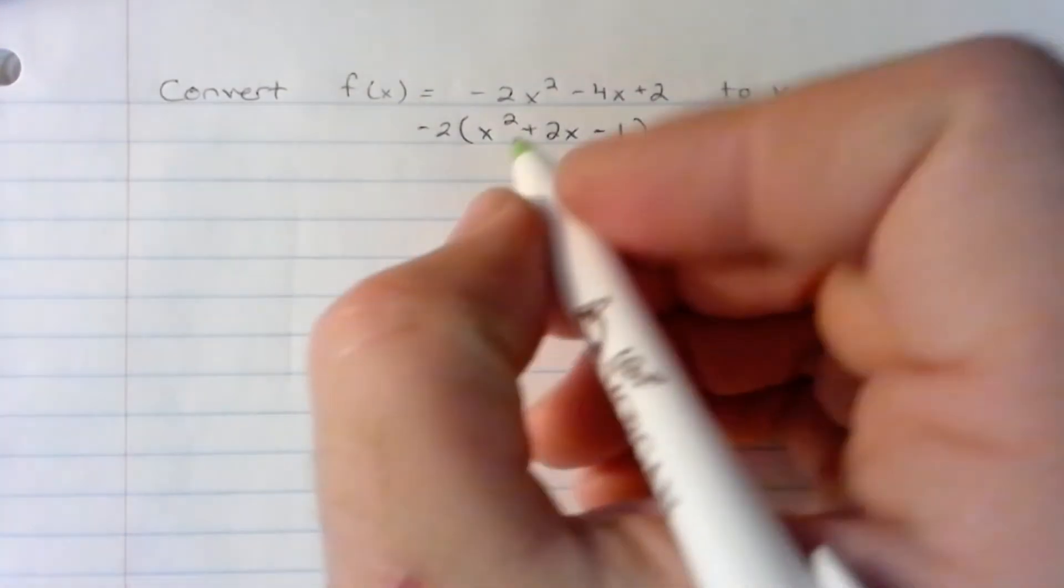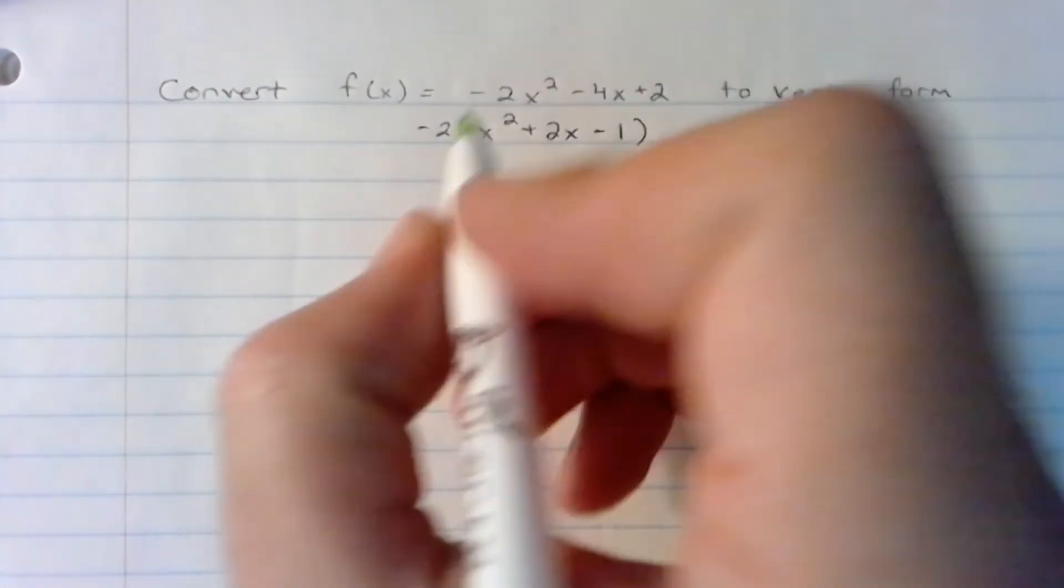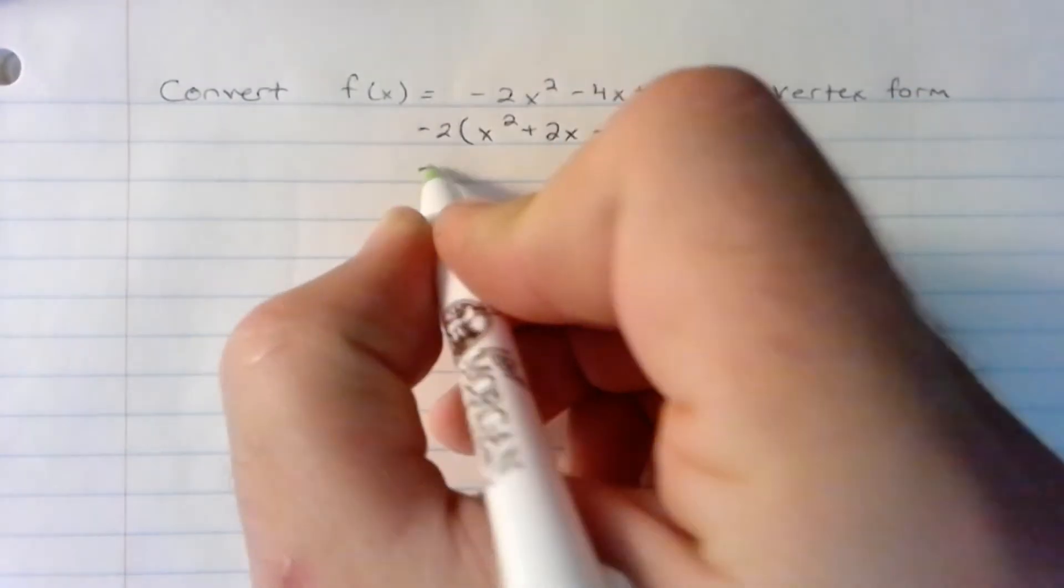It's kind of back to the original. I'm going to take half of 2, which is 1, and then square it, which is 1.